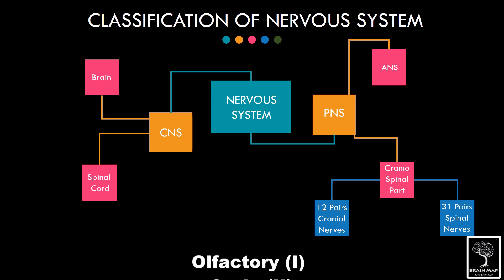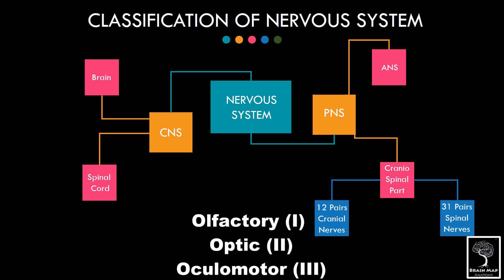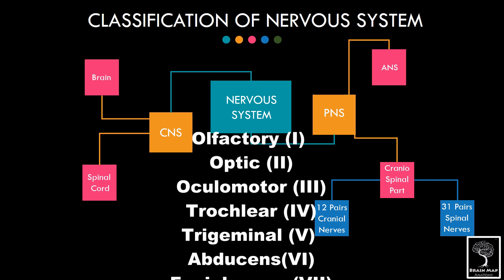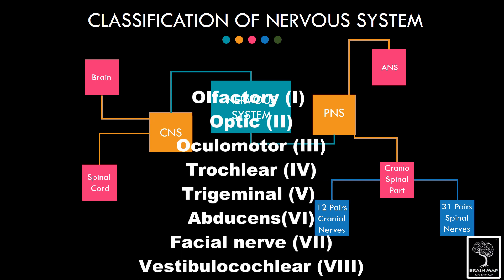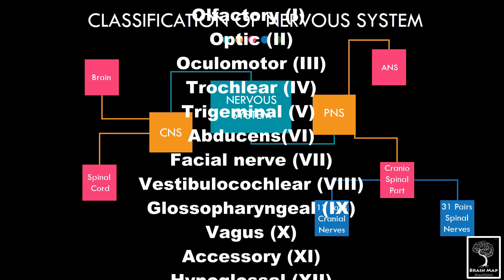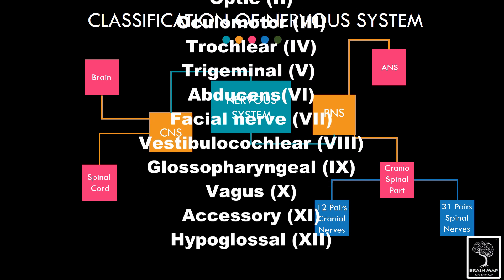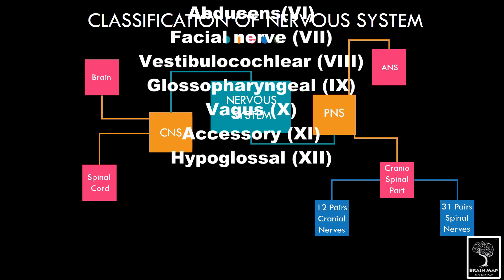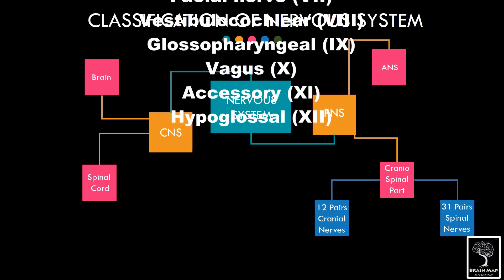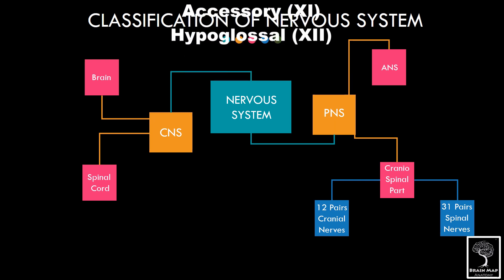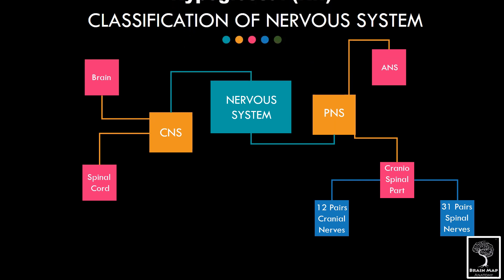The cranial nerves are: olfactory, optic, oculomotor, trochlear, trigeminal, abducens, facial, vestibulocochlear (or auditory nerve), glossopharyngeal, vagus, accessory, and the hypoglossal nerve.